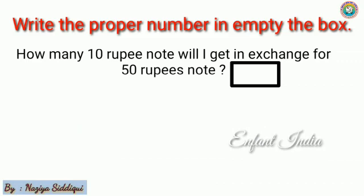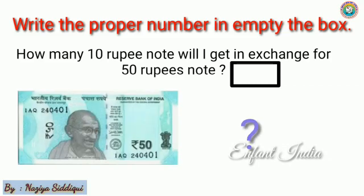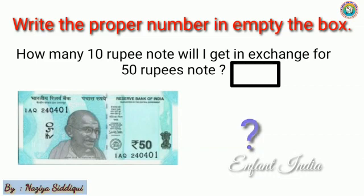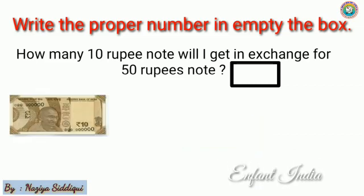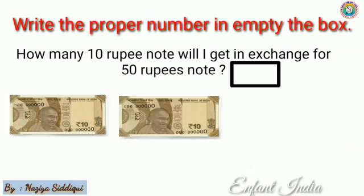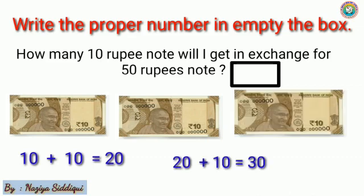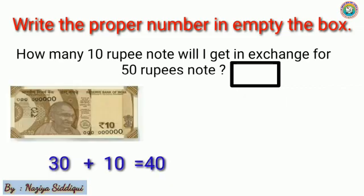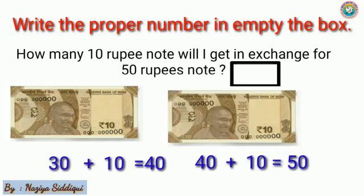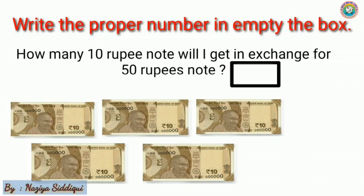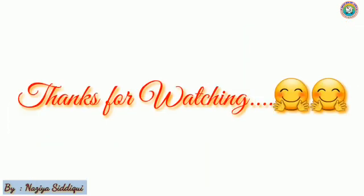Next example: how many 10 rupee notes will I get in exchange for a 50 rupee note? We have to find how many 10 rupee notes make 50 rupees. 10+10=20, 20+10=30, 30+10=40, 40+10=50. Counting them: 1, 2, 3, 4 and 5. That means 5 Rs.10 notes will make Rs.50. I hope you all understood the concept. We will meet again in my next video.